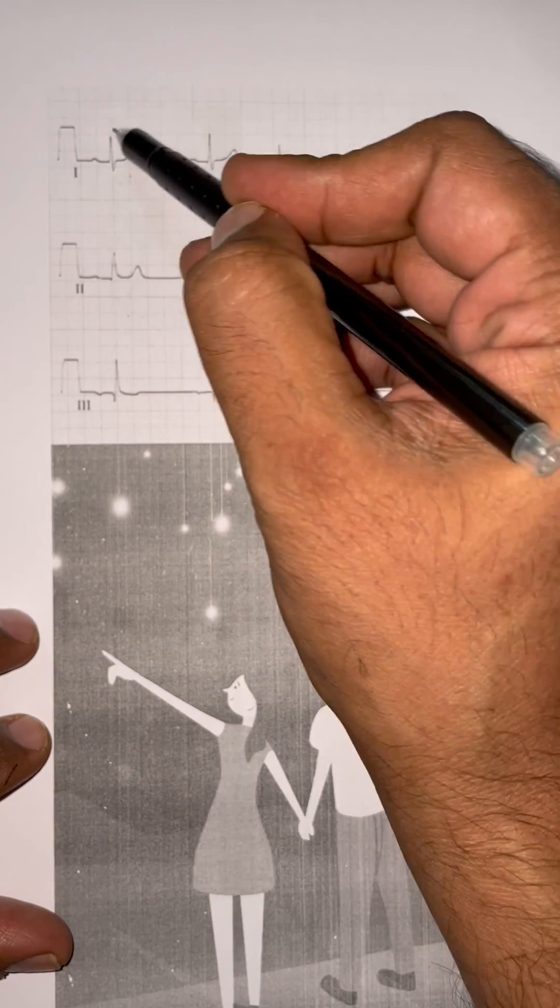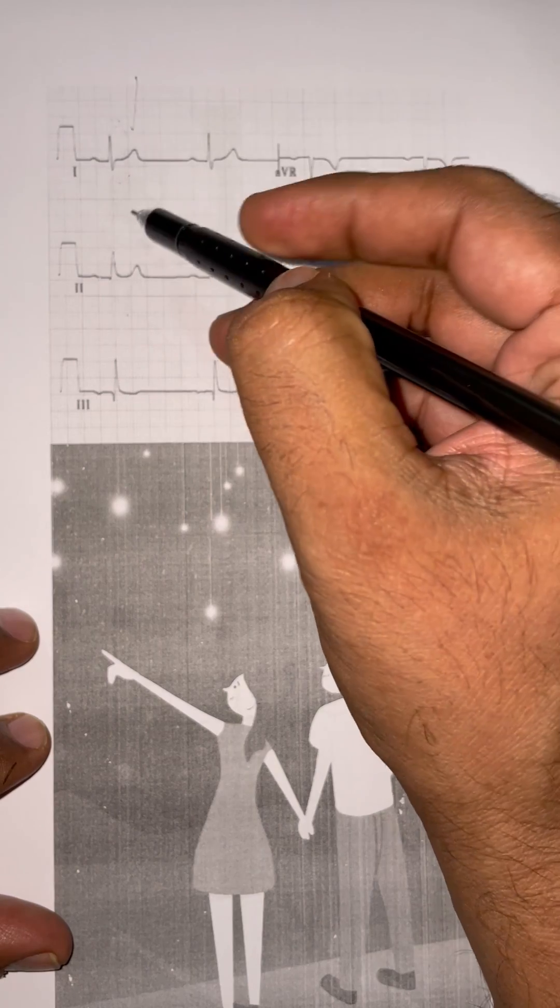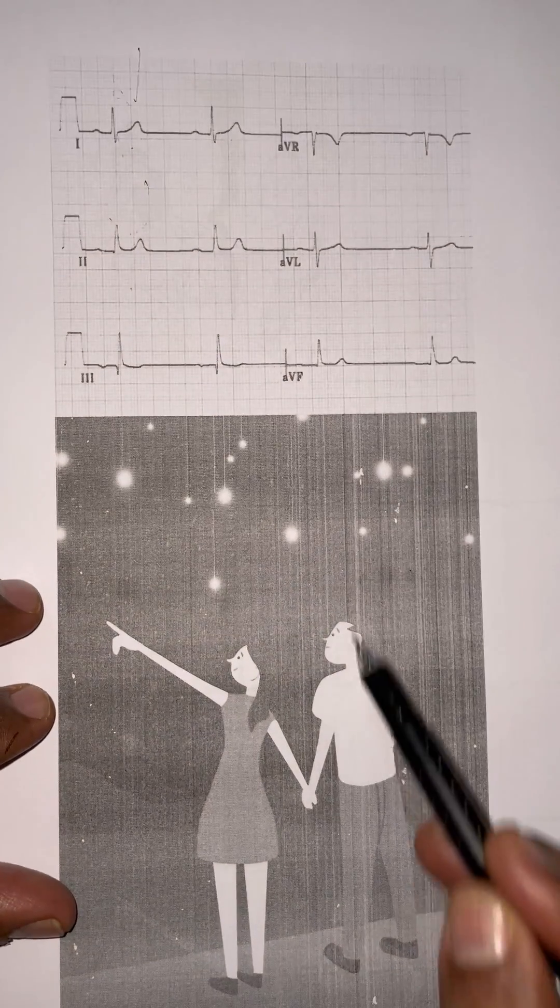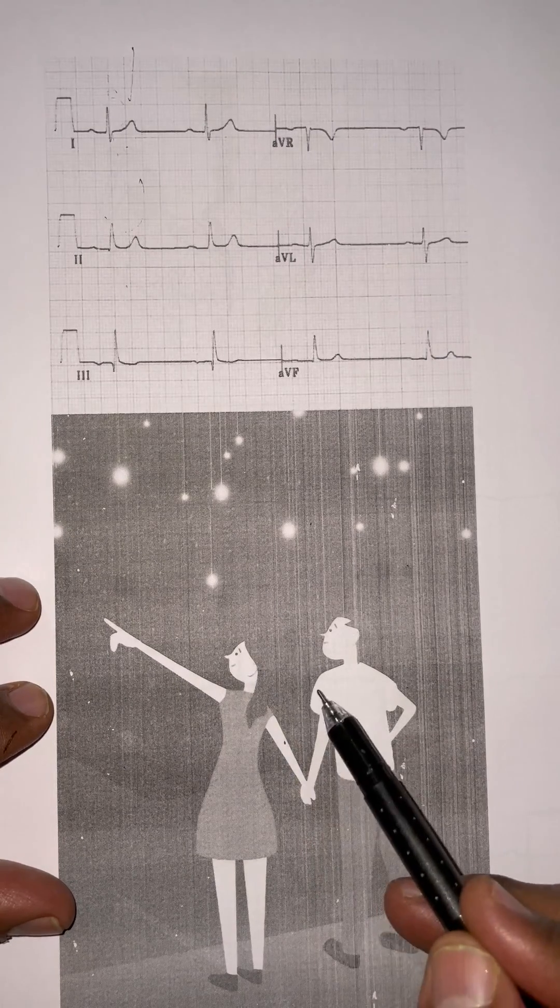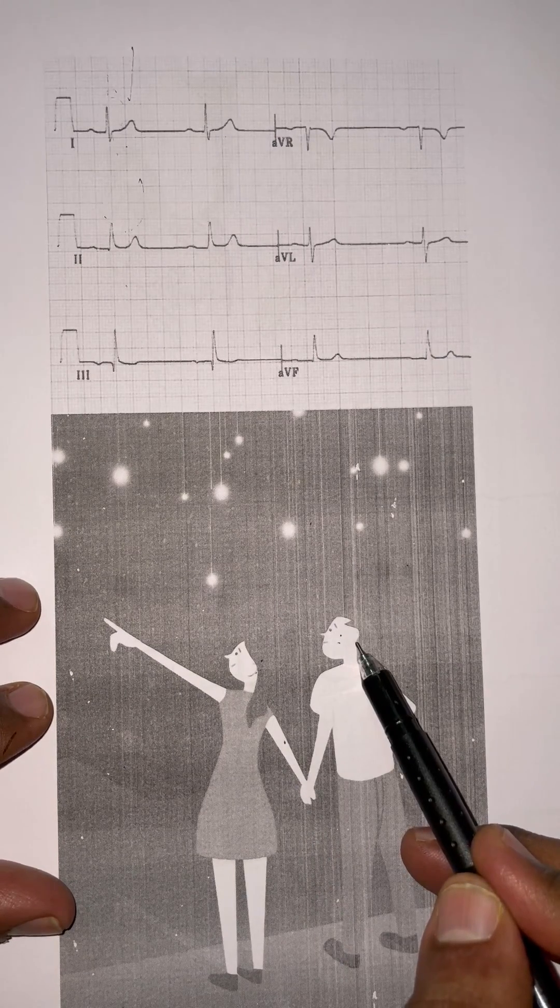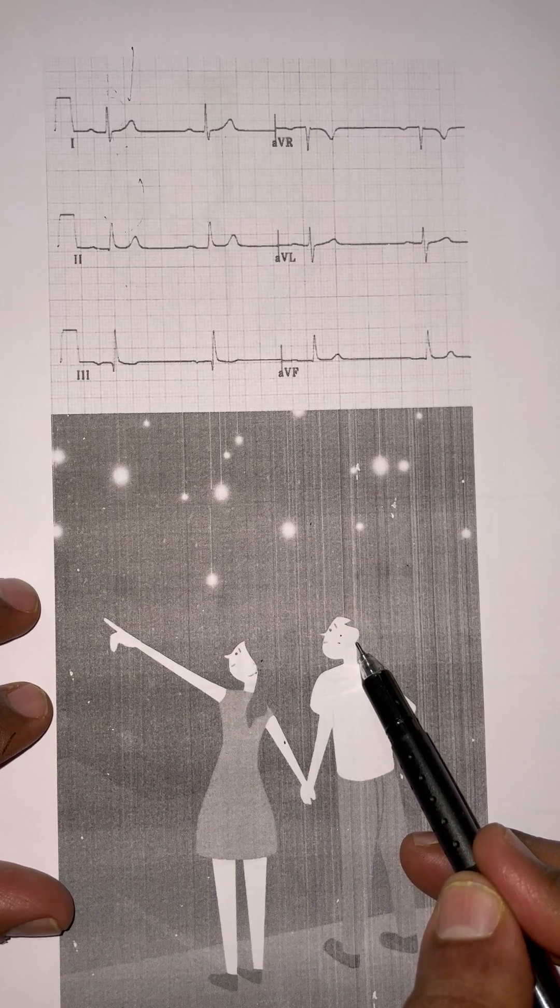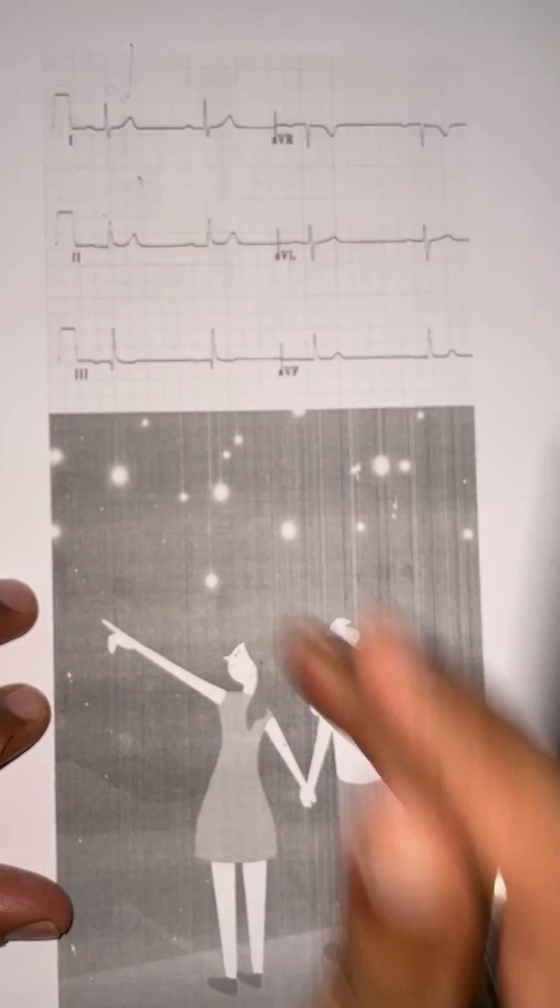If the lead one QRS is positive and lead two also QRS is positive, both are looking up. The boy is looking up, the girl is looking up, they both are romantic. Is romance normal or abnormal? At least it should start normal, right? So that is normal axis.